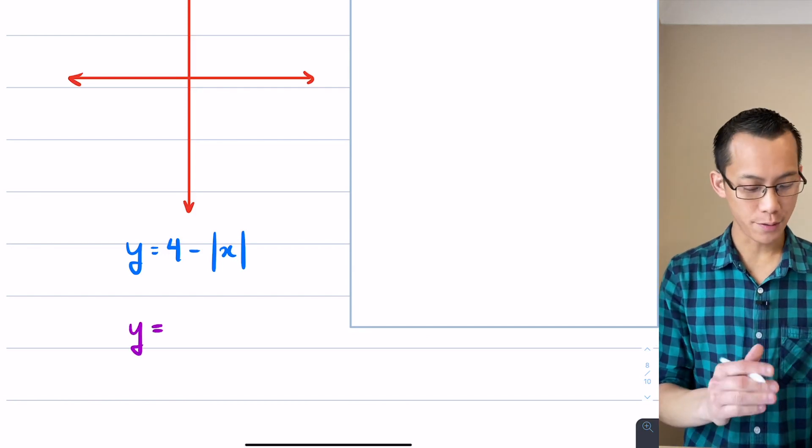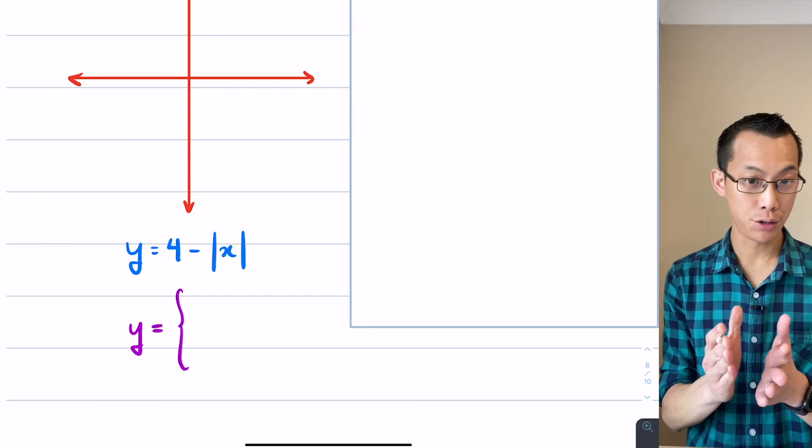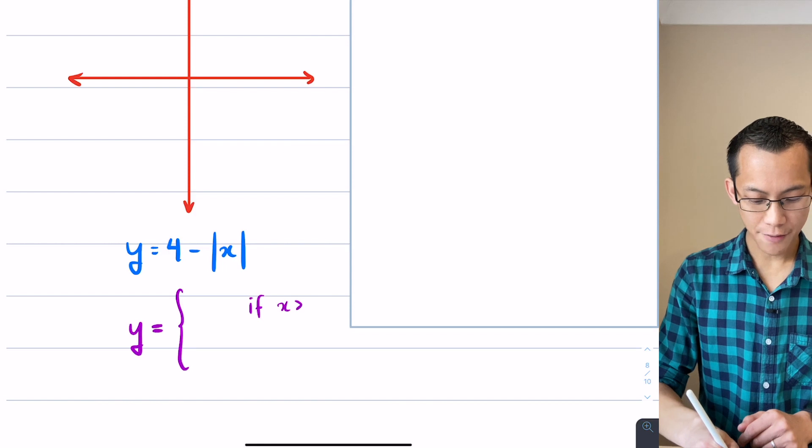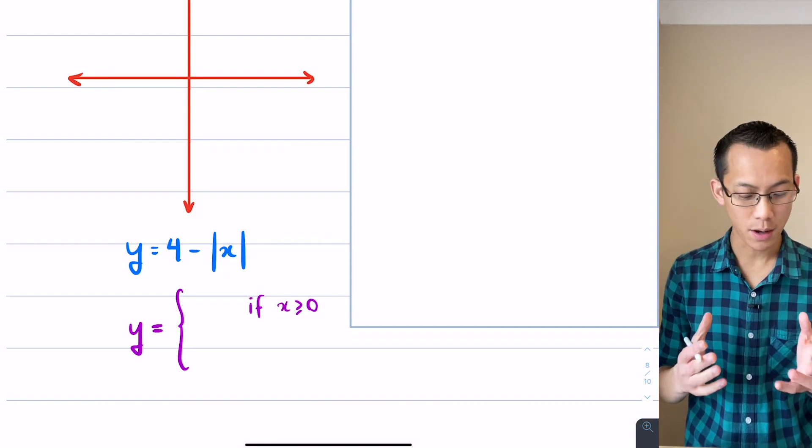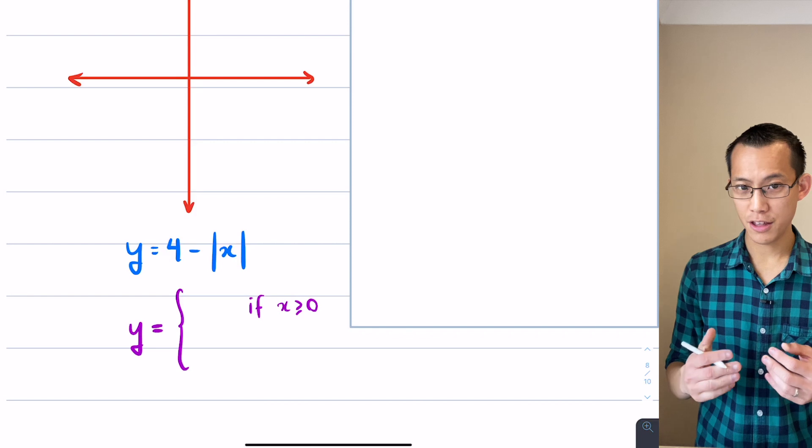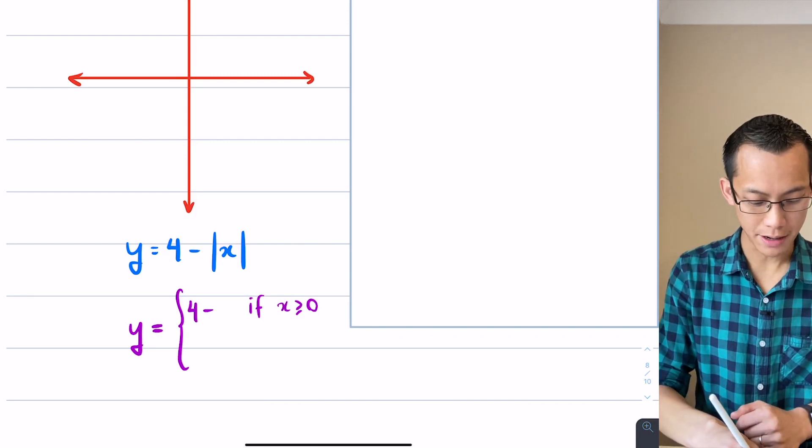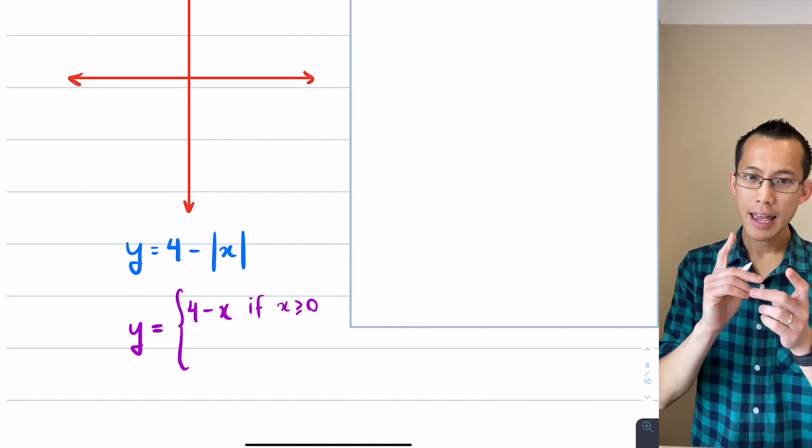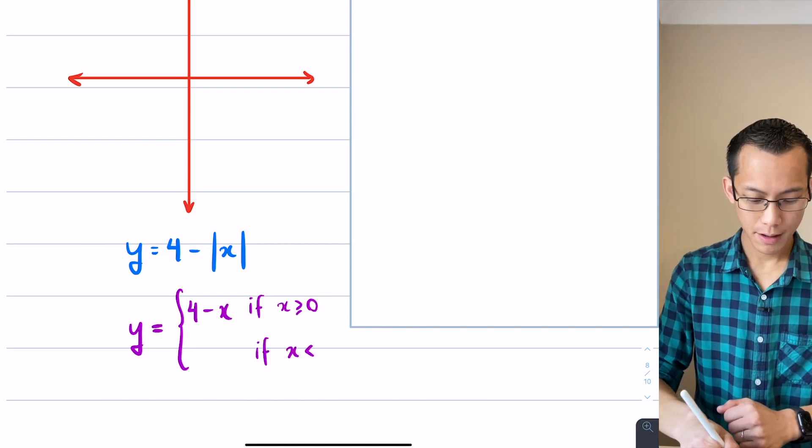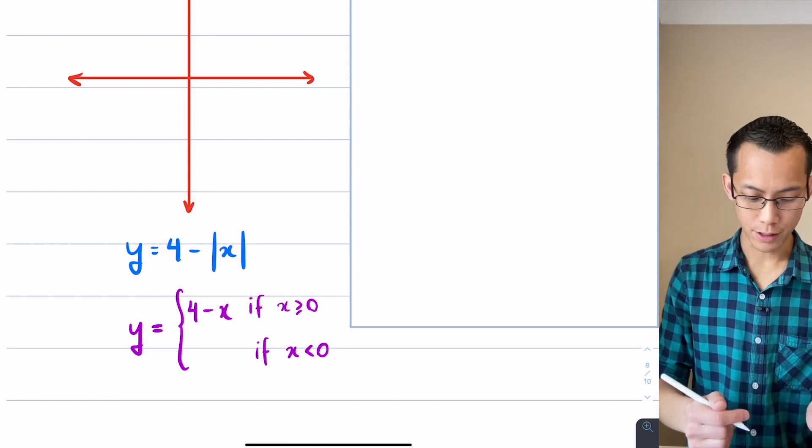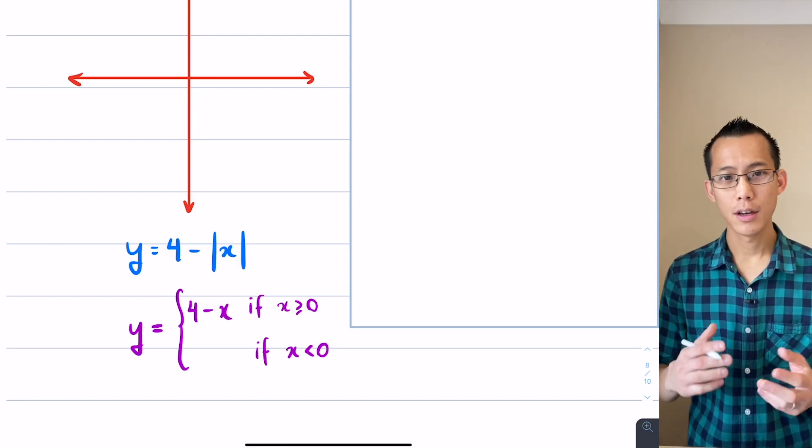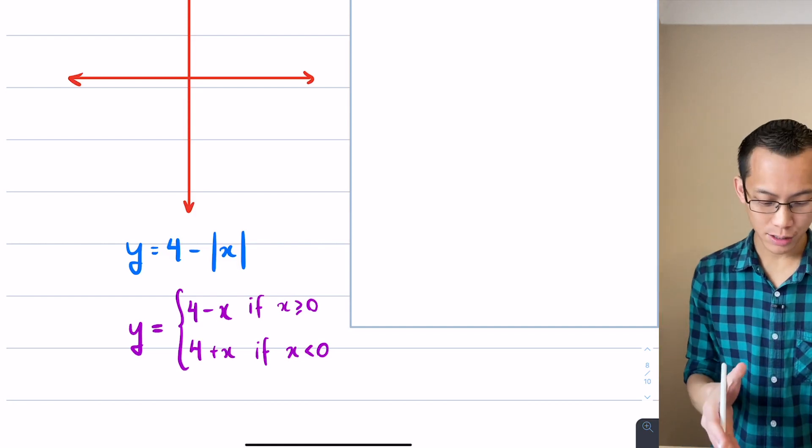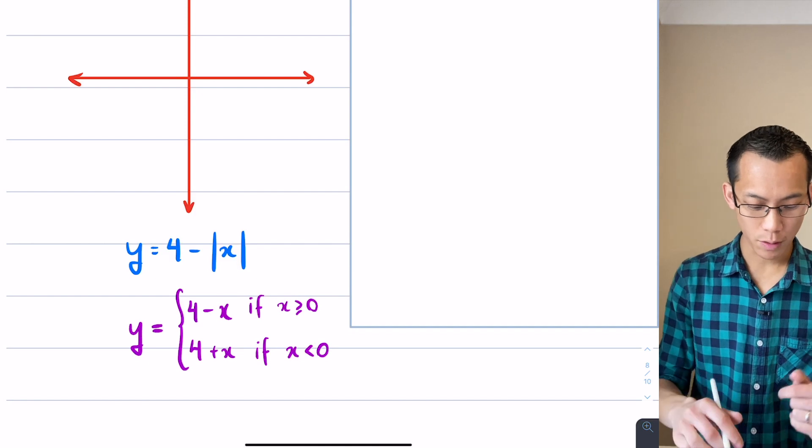Y equals 4 minus the absolute value of x is shorthand for two different things. Number one, if x is positive or zero, then you just take the value itself, so it's 4 minus x provided x is greater than or equal to zero. If on the other hand x is negative, then it would be 4 take away negative x, which is 4 plus x. I'm going to use these two as my branches.